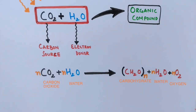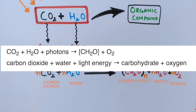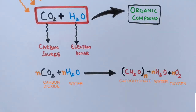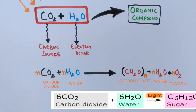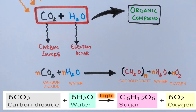Water can be cancelled out since it is both a reactant in the light-dependent reaction and a product of the light-independent reaction. Cancelling N water molecules from each side gives the net equation: CO2 + H2O → CH2O + O2. In plants, it is specifically glucose being produced, so the equation becomes: CO2 + H2O → glucose + O2.